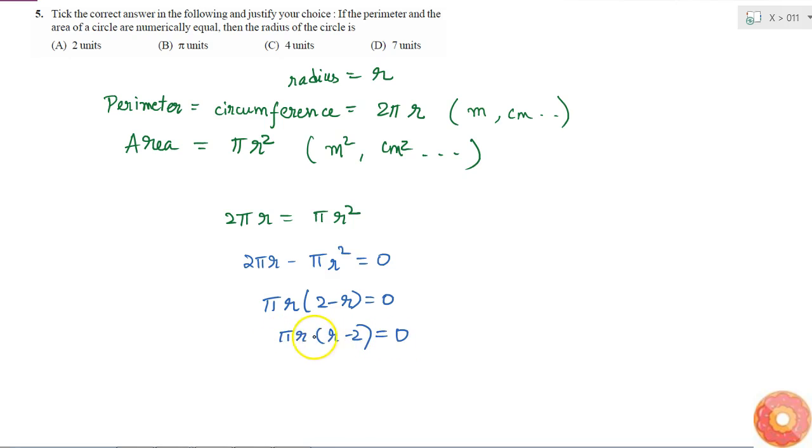For this equation to be valid, what are the different possibilities? π = 0, which is not possible because pi is a constant having the value 3.14. r = 0 or r = 2.